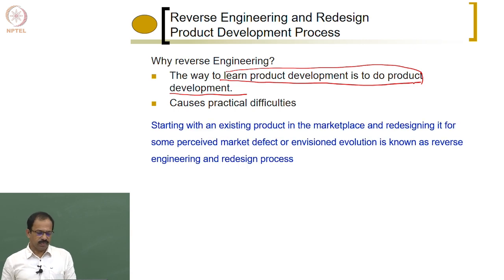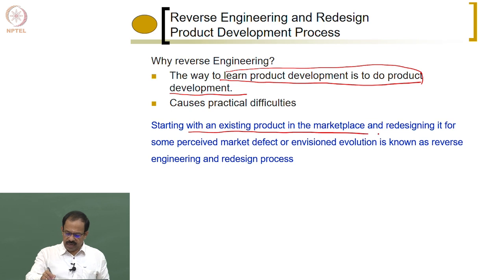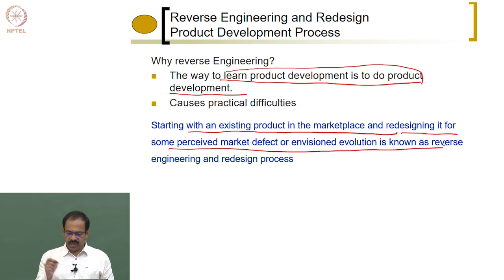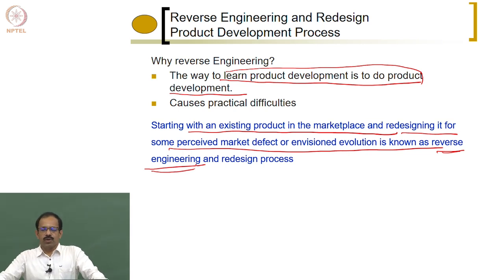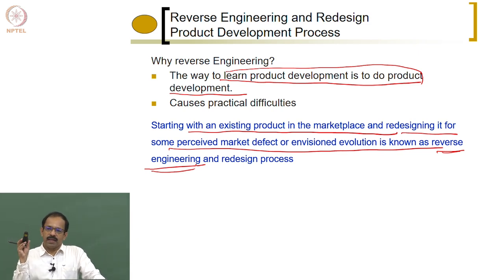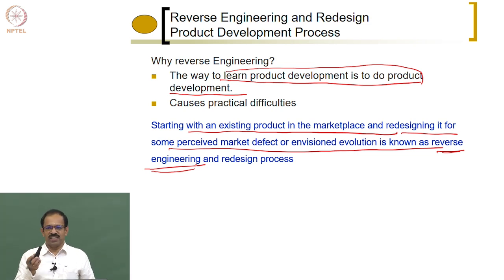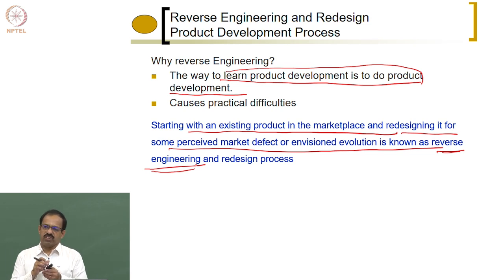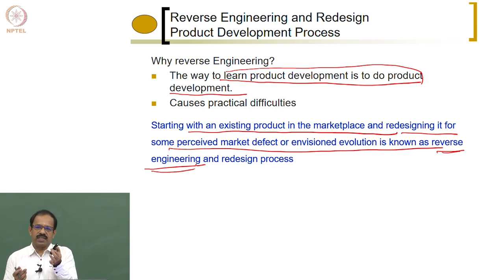In the lab class, we try to get some concrete knowledge or experience of real products, look at the product, and see how it can be improved. That is why we use reverse engineering here. Starting with an existing product in the marketplace and redesigning it for some perceived market defects is known as reverse engineering. You have a product with some problem, so you open it, understand all the things inside, find that a particular component is not properly placed or creating a problem, and then redo it as a new product.